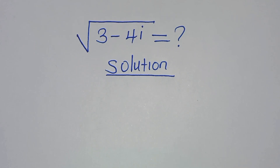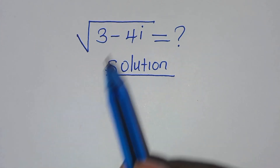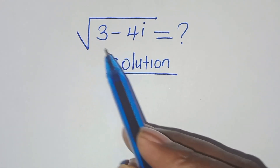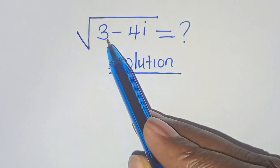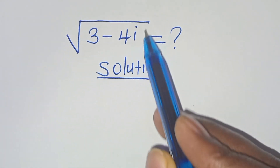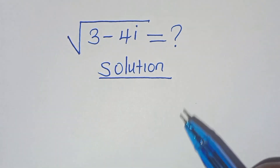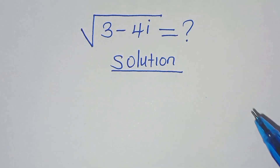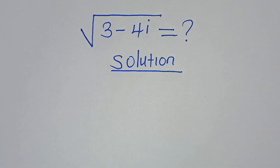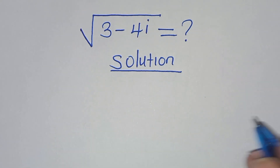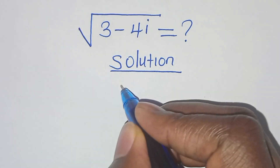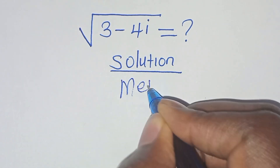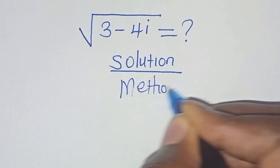Hello everyone, you are welcome to solve this nice square root math problem, which is the square root of 3 minus 4i. This is the square root of a complex number that we are going to solve by applying two methods. So let's start with method 1.